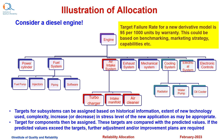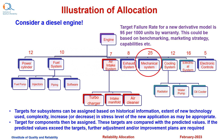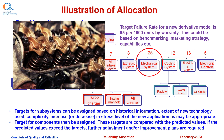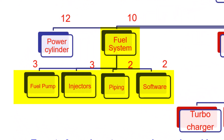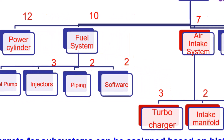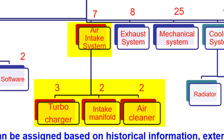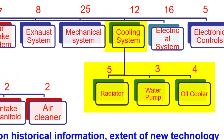The failure rate target of the engine is 95, now allocated across different subsystems: power cylinder 12, fuel systems 10, air intake system 7, exhaust system 8, mechanical system 25, cooling system 12, electrical system 16, and electronic controls 5. The mechanical system has 25 due to the large number of parts involved. Further down, the fuel system targets may be 3, 3, 2, 2 — totaling 10. The air intake system may have turbocharger 3, intake manifold 2, and air cleaner 2. Cooling system targets may be 5, 3, 4. These are examples and not actual numbers; actual numbers depend on the factors mentioned earlier.